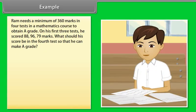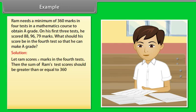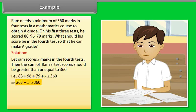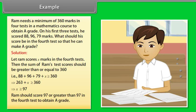Example: Ram needs a minimum of 360 marks in 4 tests in a mathematics course to obtain an A grade. On his first 3 tests, he scored 88, 96, and 79 marks. What should his score be in the 4th test to make an A grade? Solution: Let Ram score x marks in the 4th test. The sum of scores should be greater than or equal to 360: 88 + 96 + 79 + x ≥ 360, which implies 263 + x ≥ 360, so x ≥ 97. Ram should score 97 or more in the 4th test to obtain an A grade.